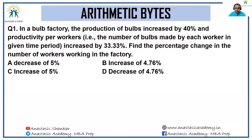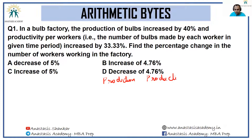Let's look at the solutions of arithmetic bytes for today. In a bulb factory, the production of bulbs increased by 40 percent, and productivity per worker — that is, the number of bulbs made by each worker in a given time period — increased by 33.33 percent. Find the percentage change in the number of workers working in the factory. There are three parameters: production, productivity, and workers.